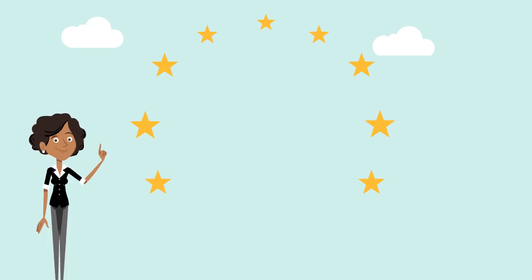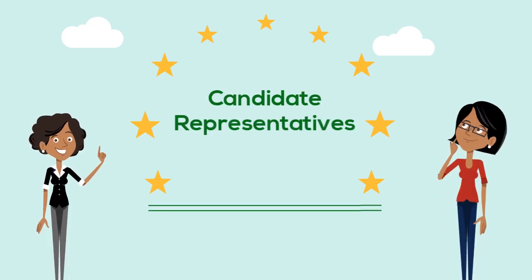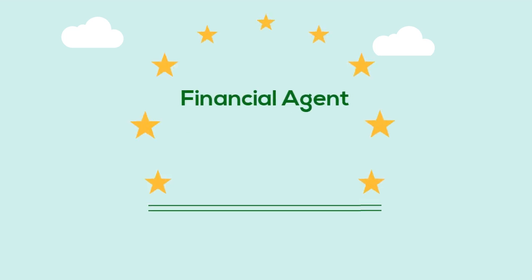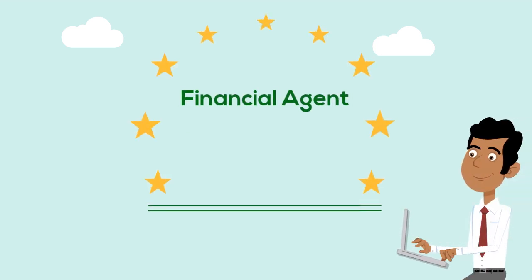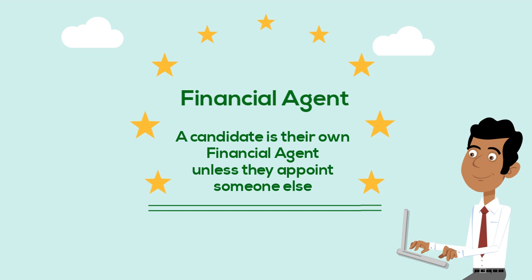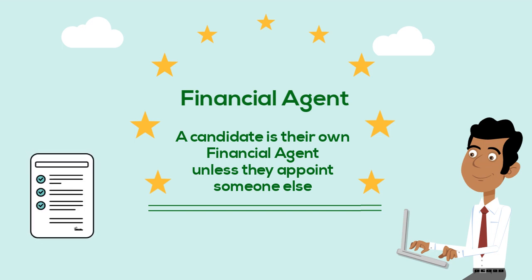Now that you've learned about the two main participants, let's talk about the other potential participants in a local election. Once a candidate commits to run for office, they can decide if they want to appoint candidate representatives. Most importantly, candidates must have a financial agent. A candidate is their own financial agent unless they appoint another individual to the position. The appointment must be signed and submitted to the local chief election officer before the nomination period ends.